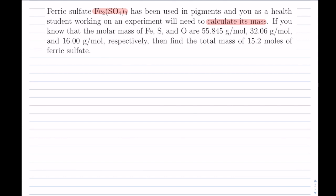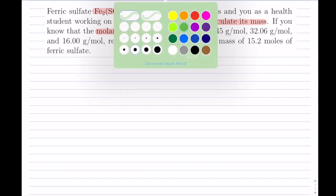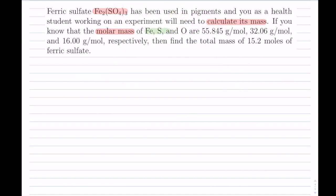If you know that the molar mass - and this is key information, molar mass will tell us we'll be dealing with grams here - we have our Fe, S, and O and the corresponding molar masses. Notice they are grams per mole.